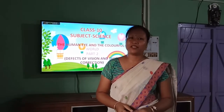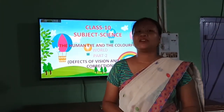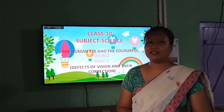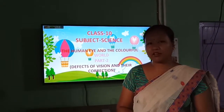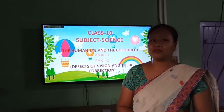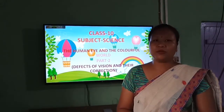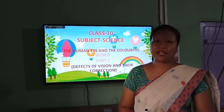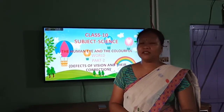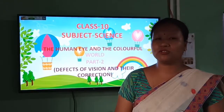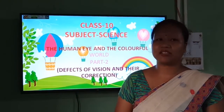Hello students and welcome back once again. Hope you all are doing well at home. Today we are going to discuss the second part of the chapter, Human Eye and the Colorful World, specifically the defects of vision and their correction. Our last class was about the structure and function of the different parts of the human eye. If any part of the eye does not work properly, then we might not be able to see the objects clearly, and this is called the defect of vision.